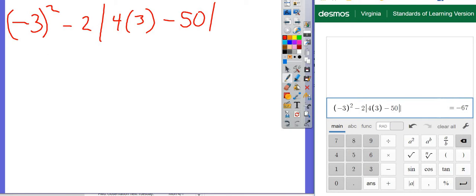Then you go back and you check. Negative 3 squared, the negative 3 inside parentheses. Minus 2. Absolute value 4 times 3. The 3 is in parentheses. Minus 50, absolute value.